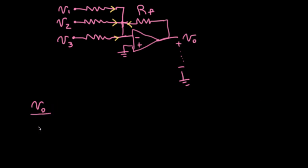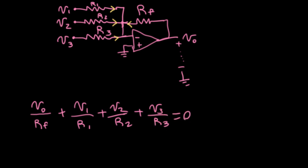The current is going to be VO over RF, and then the other currents flowing into that node will be... Oh, I should name the resistors. Let's call this R1, we'll call this R2, we'll call this R3. So V1 over R1 plus V2 over R2 plus V3 over R3. We'll write this all equal to zero.